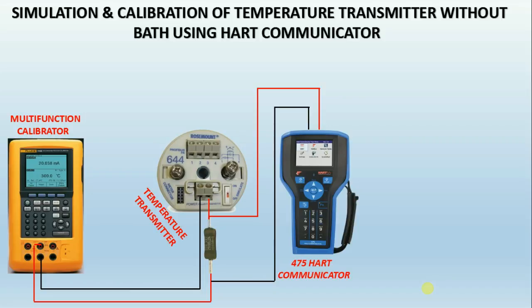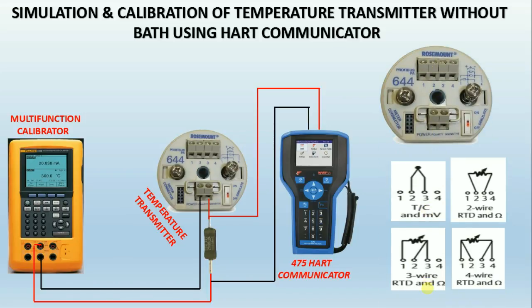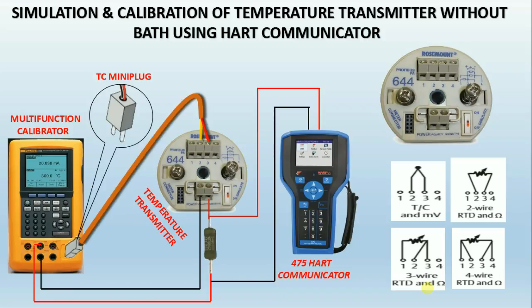The transmitter can be configured for different types of RTDs and thermocouples, and shown how to connect to the transmitter according to your configuration. Here as an example, I connected the thermocouple option in the transmitter for calibration. Before simulating, first select the source in the process calibrator, then press the TC/RTD button and select the type of thermocouple. Then simulate temperature by feeding through the keypad. Before calibrating, the transmitter has to be configured to thermocouple K-type by using the HART communicator. This process calibrator can be used for sourcing temperature according to your range, and it can also measure loop milliamps according to the temperature you are sourcing.